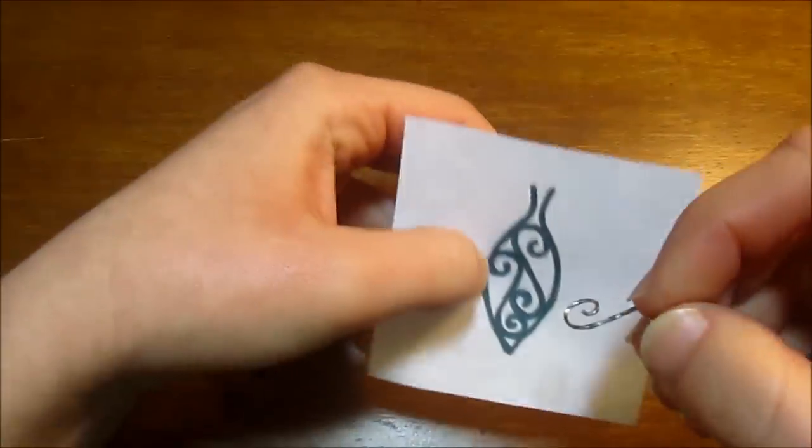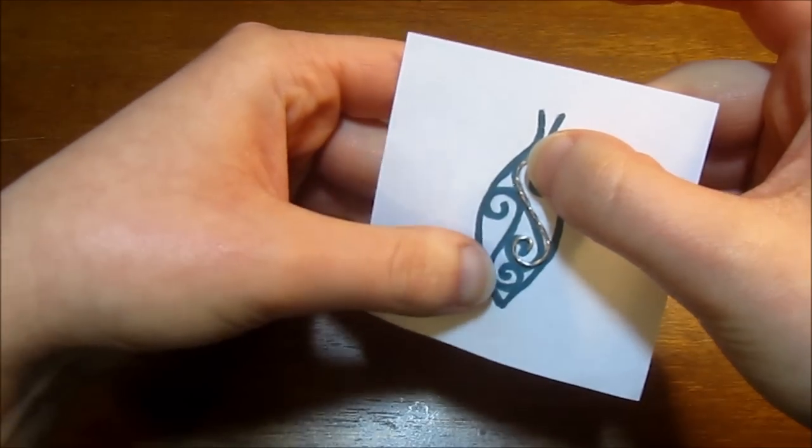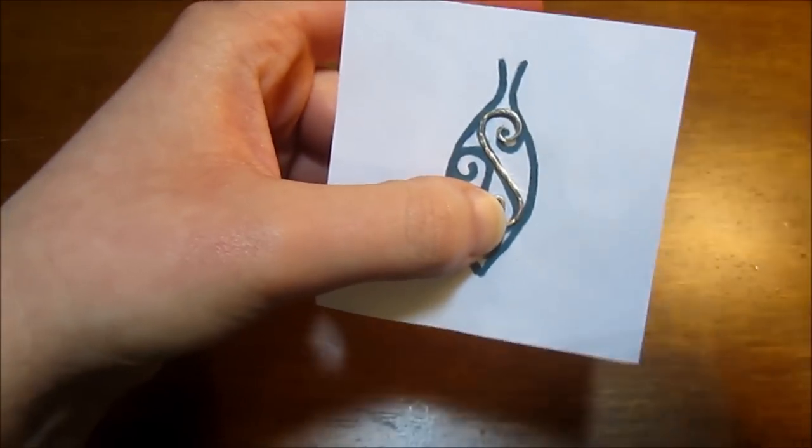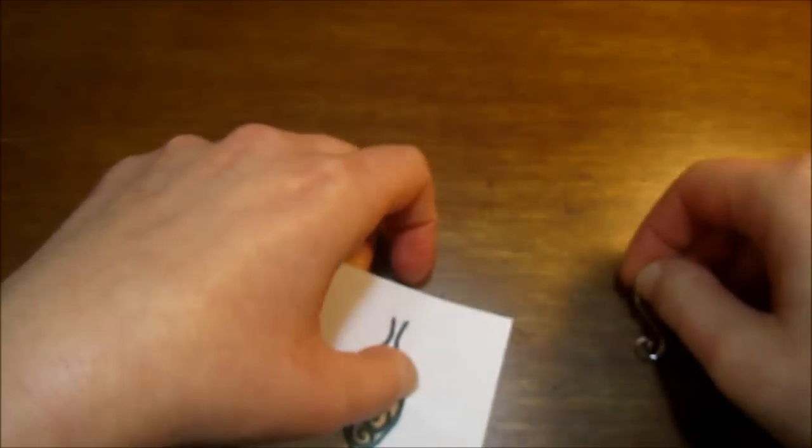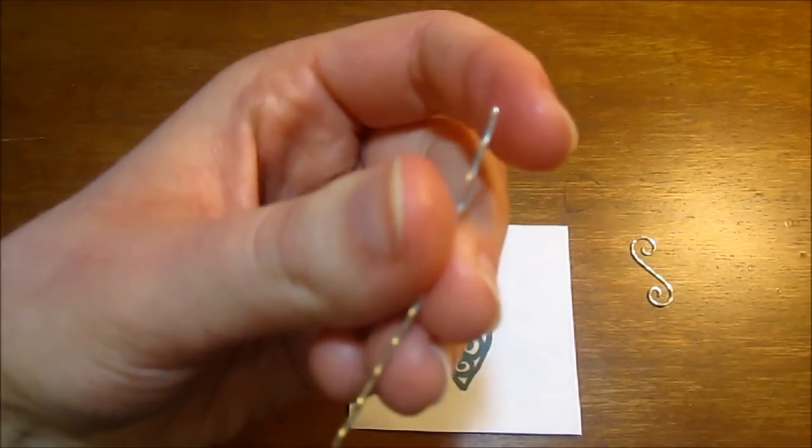So go ahead and spiral one end and then do the other end in the opposite direction. And you can lay this over your little sketch that you did earlier just to make sure you're getting the right approximate size and shape. And do the same thing with your shorter piece.